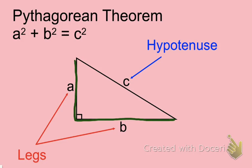The third side is the longest side and that's going to be called the hypotenuse. Please make sure that you're spelling that correctly in your notes. We will always recognize the hypotenuse because it will always be the one that's directly across from the right angle.